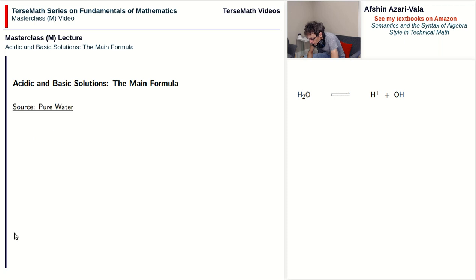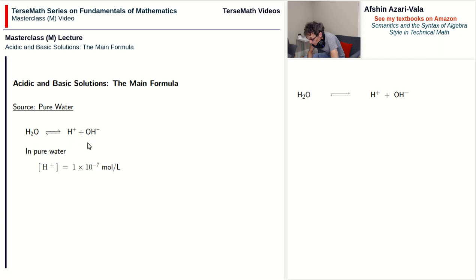In terms of how many of these ions are floating around in pure water, based on experimental data, the concentration of H-plus is 1 times 10 to the power of negative 7 moles per liter. This is a very, very small number — 1 ten-millionth of a mole per liter. When a water molecule breaks down, you get equal numbers of H-plus and OH-minus ions, one of each. Therefore, the concentration of OH-minus is also 1 times 10 to the power of negative 7 moles per liter.